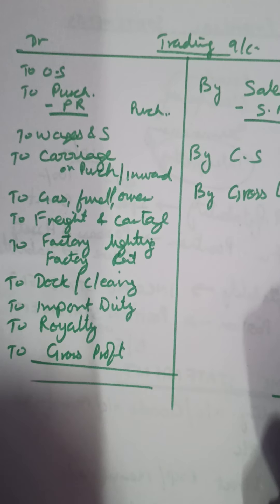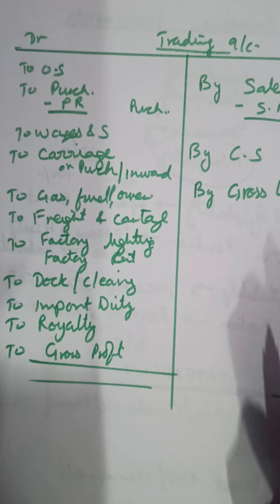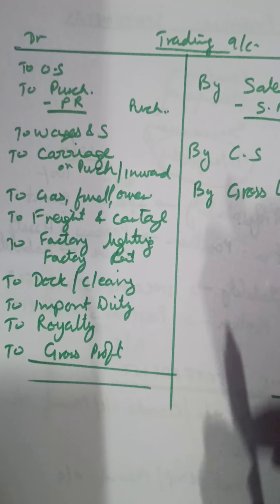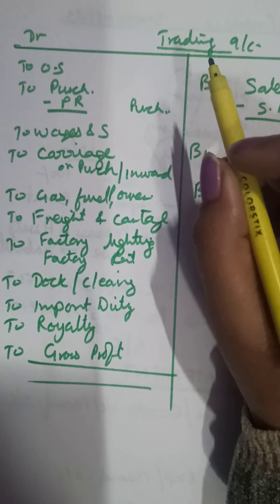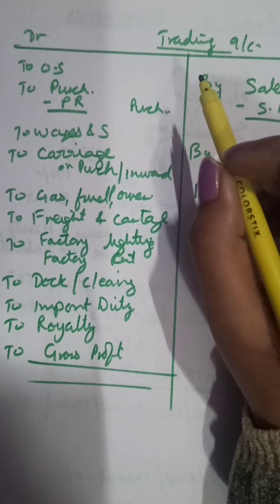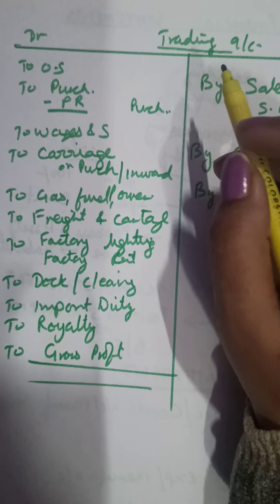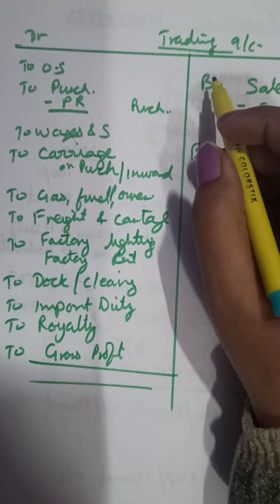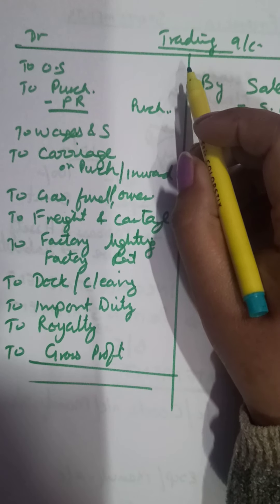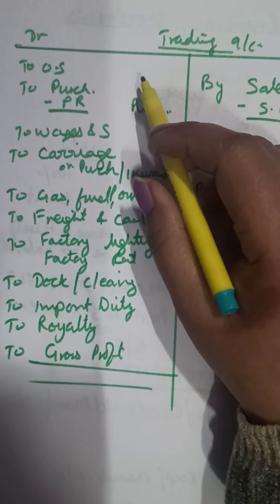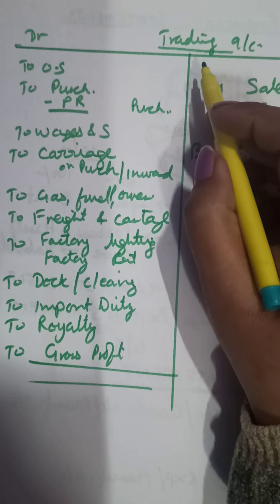Good morning class 11 girls, we proceed with financial statements today. I had discussed the first type — the income statement. There are two statements that we prepare in this chapter. The first type of statement is called the income statement, that includes two types of accounts.